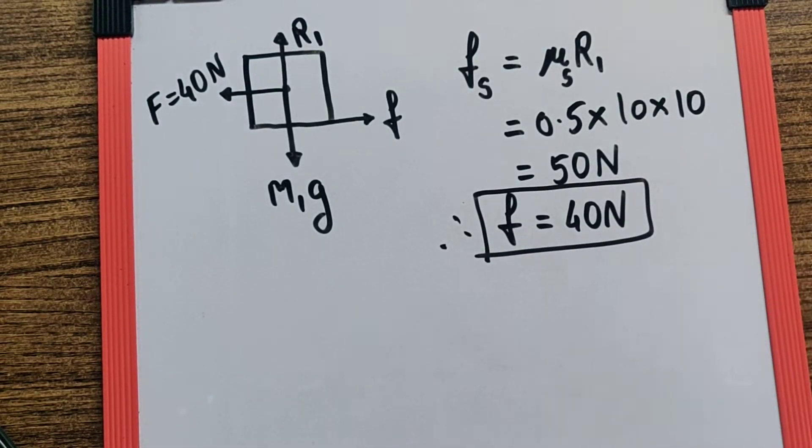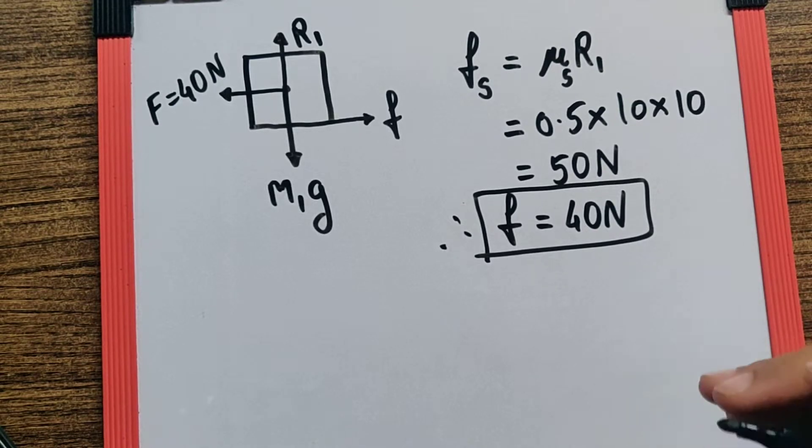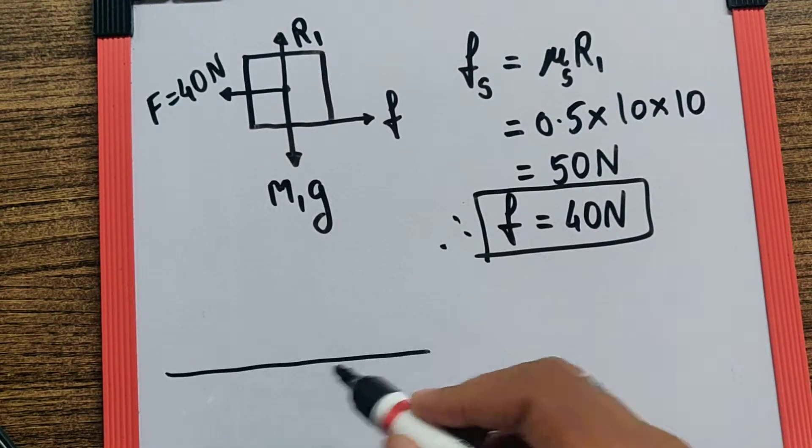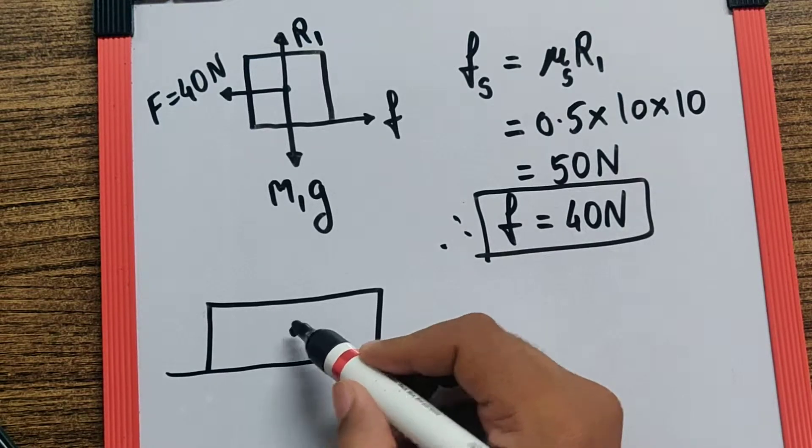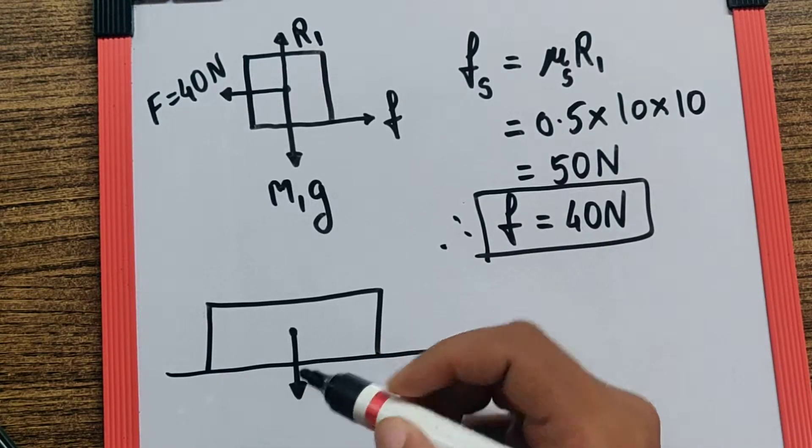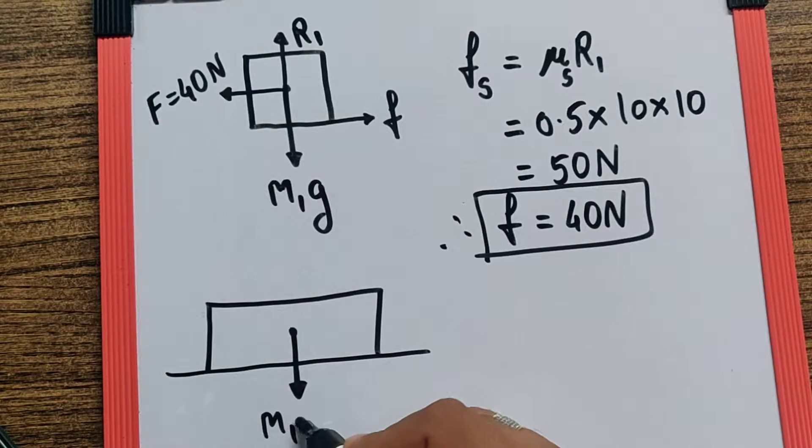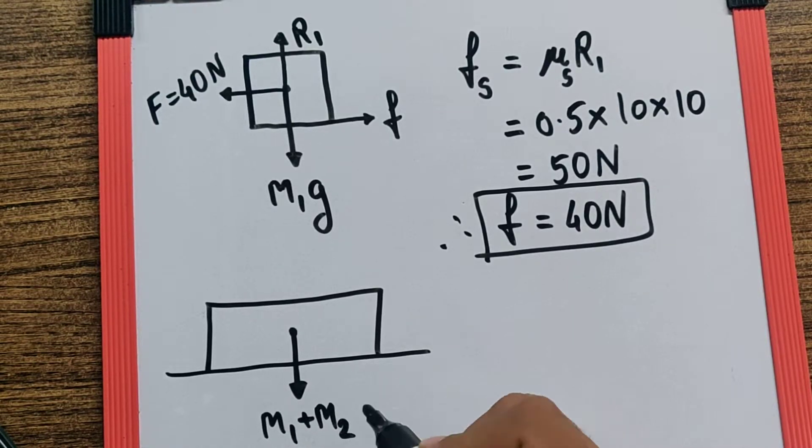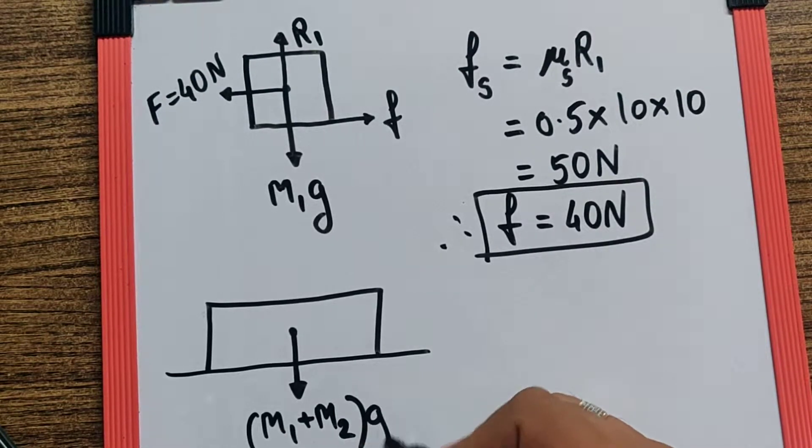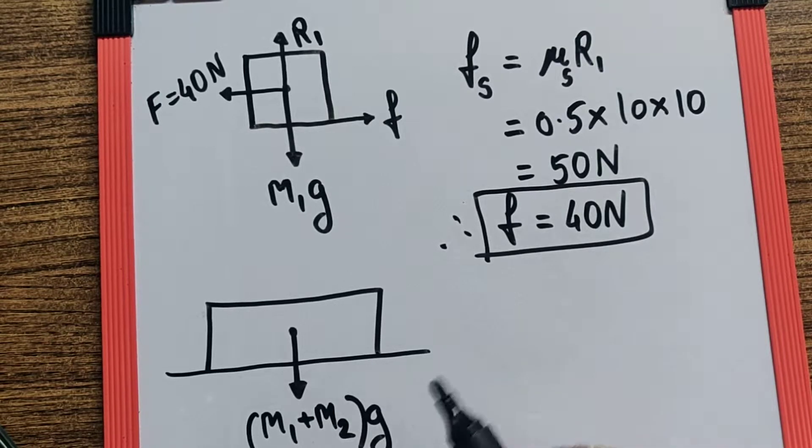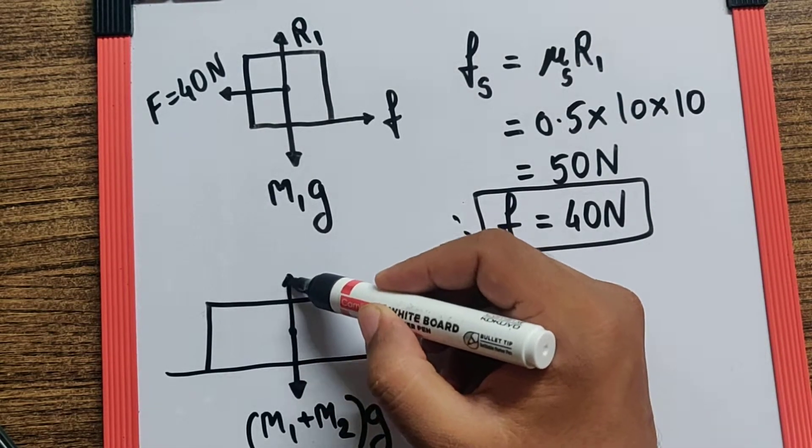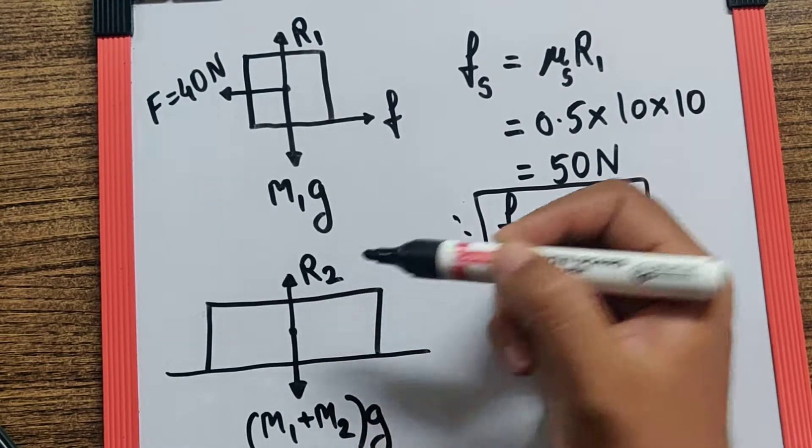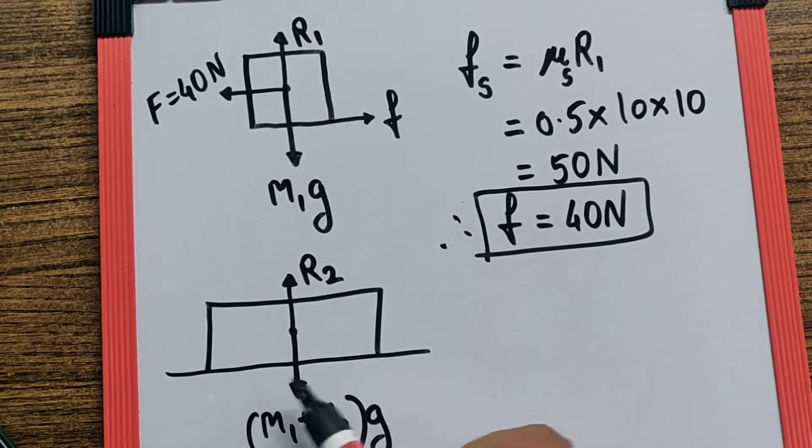So if I draw a free body diagram of the slab, you will find the weight acting downward is going to be (M1 + M2)g because it is the total weight acting downwards. And there will be a normal reaction R2 acting vertically upwards. Since the ground is frictionless,